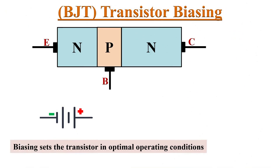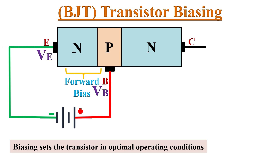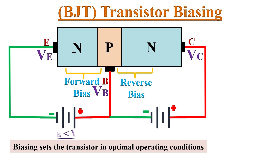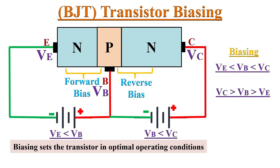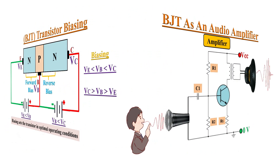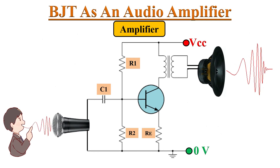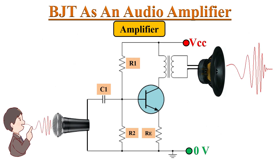Transistor biasing is the process of providing DC voltage to a transistor in order to keep it in optimal operating conditions or in the active region. In transistor biasing, the emitter-base junction is forward biased and the collector-base junction is reverse biased, so that it can work as an amplifier. Amplification is one of the most common applications of a BJT — it can increase the strength of a weak signal.